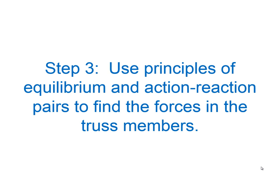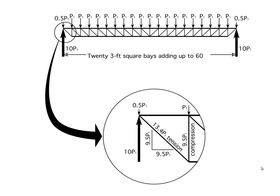Now we're going to use the principles of equilibrium and action-reaction pairs to find the forces in the truss members. This is a twenty-bay truss with a P1 force on all interior vertices and a 0.5 P1 force at the end vertices because they're only supporting half a bay. With twenty bays, the reactions are ten P1 at each end. We look at the end because the web members there are most heavily loaded — shear force is largest near the end.